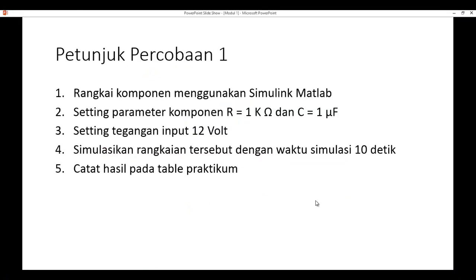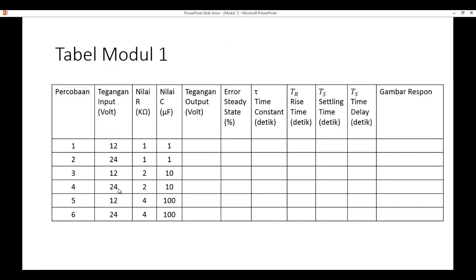Pada modul pertama ini terdapat sekitar 6 percobaan, di mana masing-masing percobaan akan mengubah parameter tegangan input, nilai resistansi, dan kapasitansi. Petunjuknya: pertama, rangkai komponen menggunakan Simulink MATLAB. Setting parameter R=1KΩ dan C=1µF, kemudian setting tegangan input 12V. Setelah itu simulasikan rangkaian dengan waktu simulasi 10 detik.